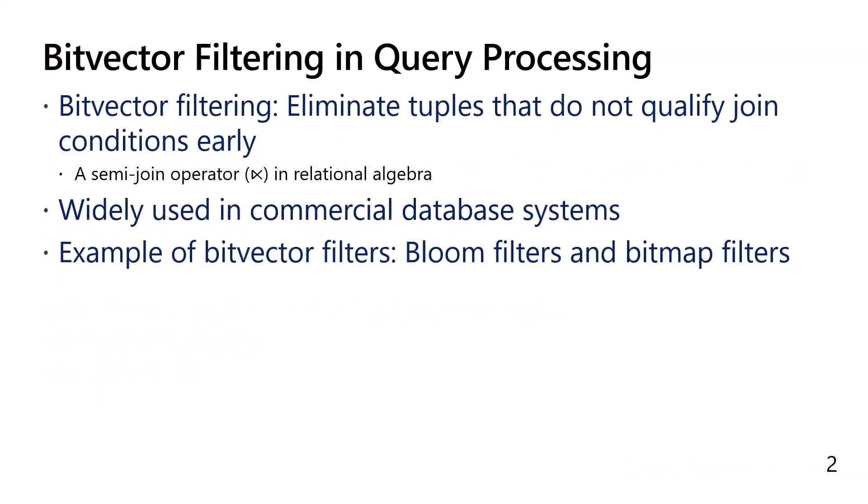BitVector filtering is a technique that eliminates tuples that do not satisfy join conditions early in query processing. It is widely used in commercial databases to speed up query execution. Examples of data structures used for BitVector filtering include bloom filters and bitmap filters.